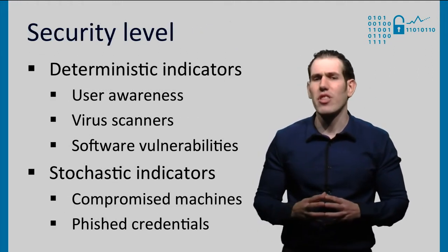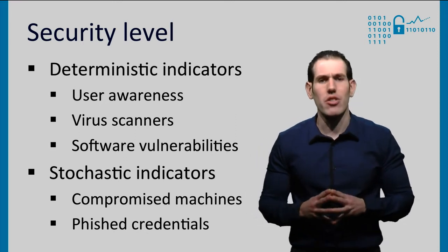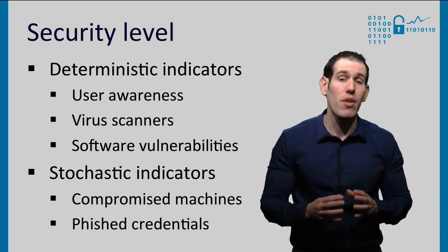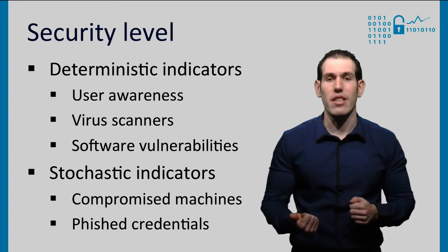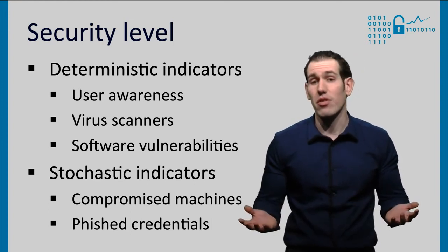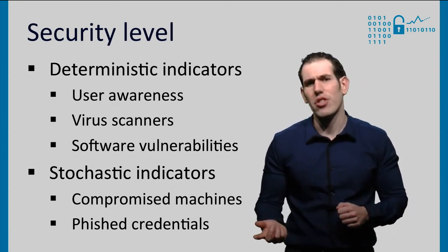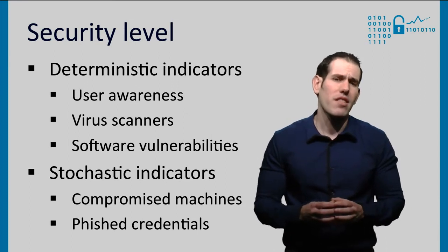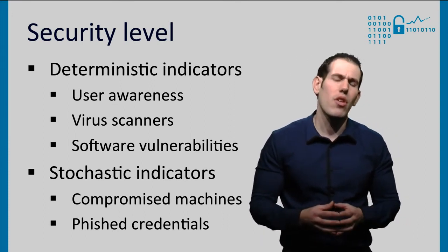The second variable that we want to measure is the security level — basically the degree to which all direct and indirect costs have mitigated the risk faced by the organization. How to measure it is the topic of the next lecture, so we will only touch on it briefly here. Security level can have deterministic and stochastic indicators. Stochastic indicators are able to capture uncertainty produced by attacker behavior, while deterministic indicators don't. For example, deterministic indicators include patch level, existence of intrusion detection systems, and whether virus scanners are in place. Examples of stochastic indicators are the incidents reported by intrusion detection systems, the number of fixed passwords, or the number of compromised computers.